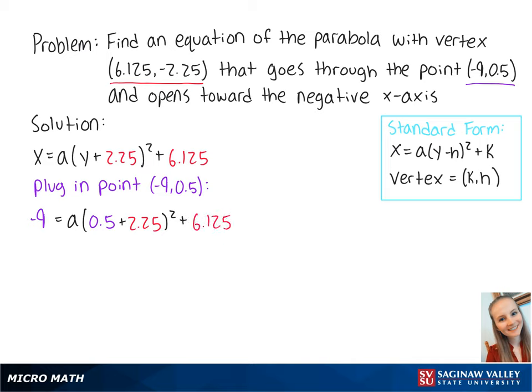This gets us a = -2. Now we plug a = -2 into the first equation to get x = -2(y + 2.25)² + 6.125.